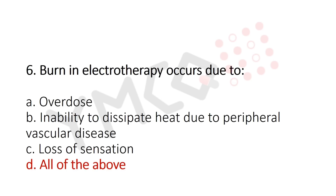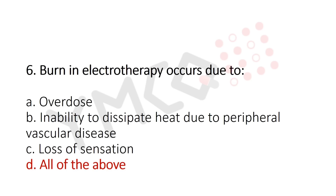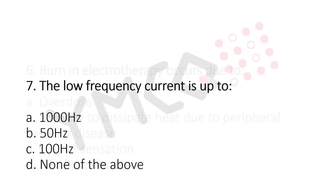Question 7: The low frequency current is up to — option A: 1000 Hz; option B: 50 Hz; option C: 100 Hz; option D: none of the above. The answer is option A: 1000 Hz.